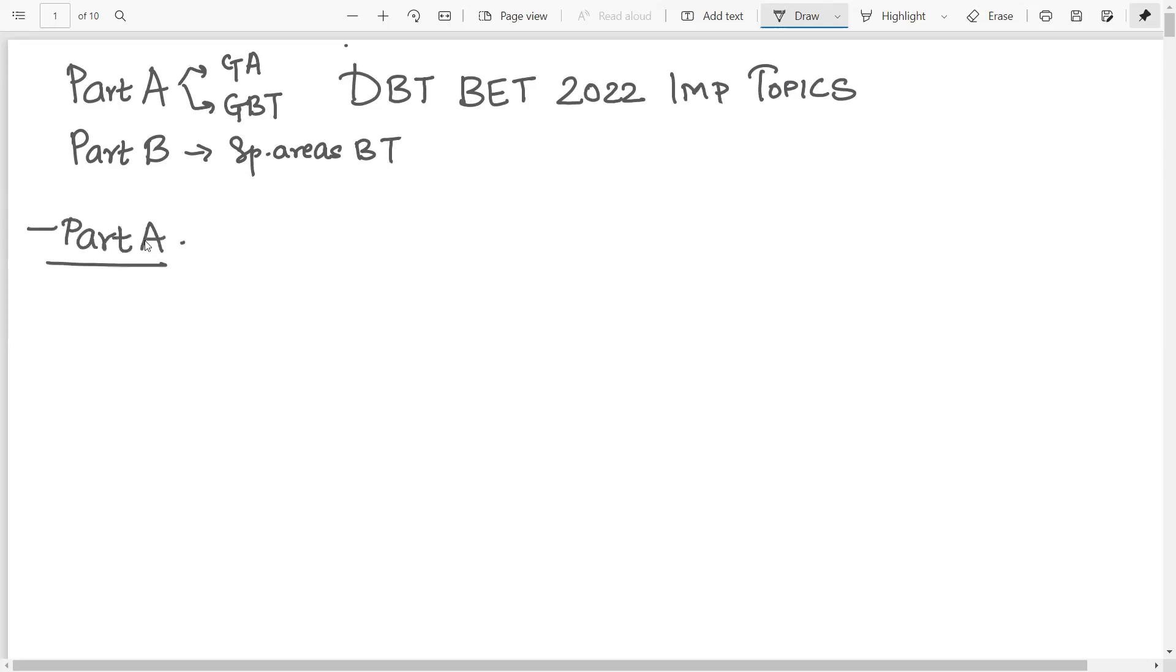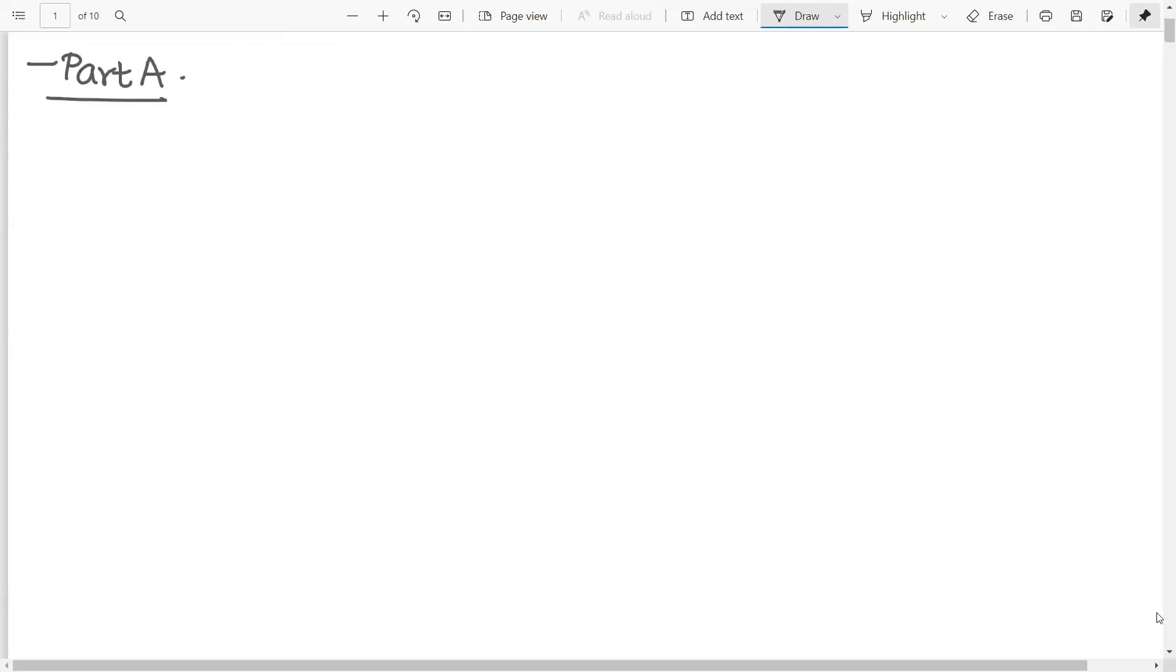So we first talk about what are the important topics in Part A. Now, I have tried my best to keep it very similar to the syllabus given by DBT so that it is easier for you to study. If you do not have the syllabus with you, please check the description down below. Let me first tell you what you need to know about the general aptitude section. Now, the good part about DBT-BED is that the aptitude section is not very tough. So as compared to CSIR NET, the topics are less and they are easier.